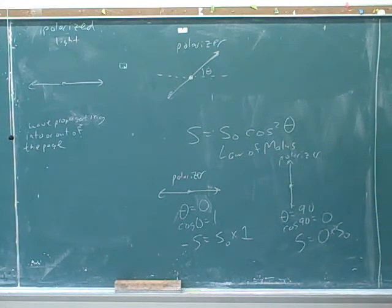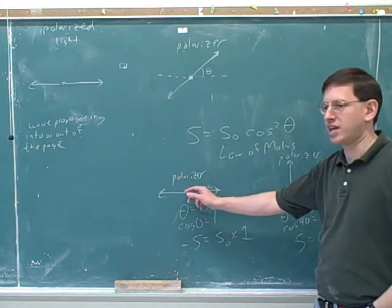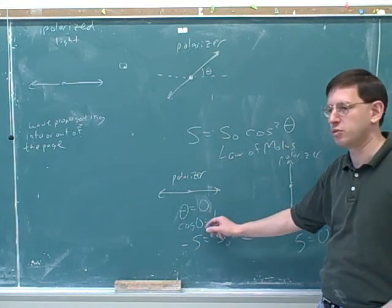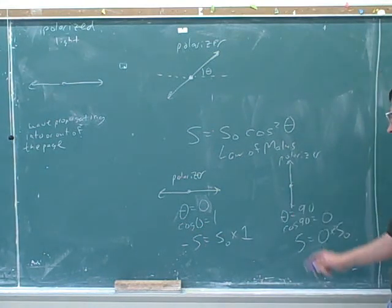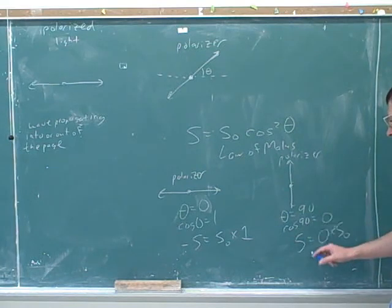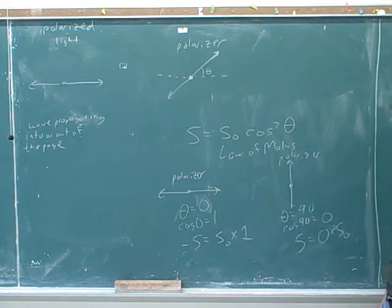That's what we would have expected, in this case. And then just in general, you can see that the closer we are to this case, the closer the cosine will be to one and the more intensity we'll get through. And the closer we are to the perpendicular case, the closer the cosine will be to zero and the less intensity we'll get through. So let's be quantitative about that.